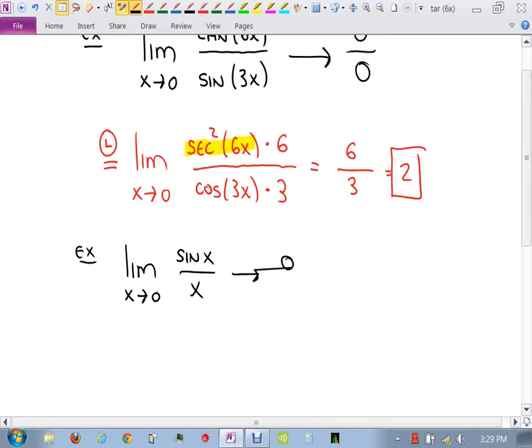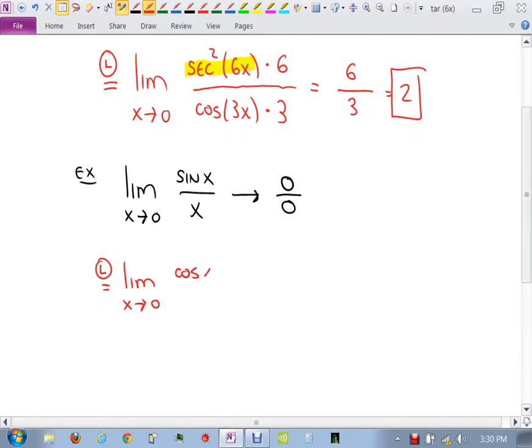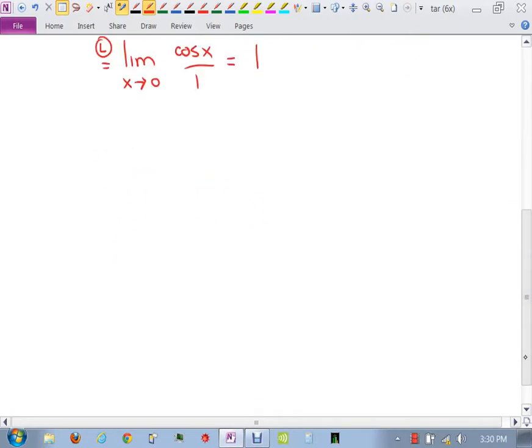Because this does go to 0 over 0. But by L'Hôpital's rule, I can just do derivative of top and bottom and get what? Cosine x on top and on the bottom 1. And what's cosine 0? 1 over 1 is 1. I kind of already know what you're thinking, but I have a good answer to some of your questions that I think some of you are toiling with in your minds.